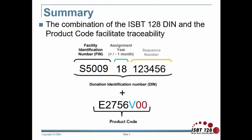In summary, the DIN and product code facilitate traceability. The DIN allows a facility to trace products globally from the donor to the recipient. The product code allows you to uniquely identify the product. For example, while both red cells and the plasma from a single donation will have the same DIN, they will have different product codes, making each product unique. It is the combined use of the DIN and the product code that allows for products to remain traceable for a 100-year period.